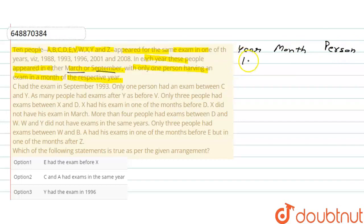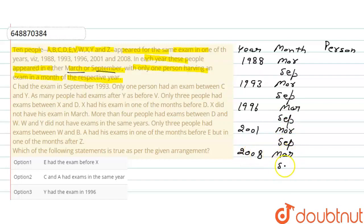Year है 1988, month है same रहेंगे March and September, बस year ही change होगा। 1993 March and September, 1996 March and September, 2001 March and September, 2008 March and September. Now let's see, C had the exam in September 1993. C का exam होता है year है 1993, September.